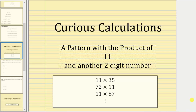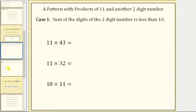In this video, we will discuss a pattern that will allow you to easily determine the product of 11 and another two-digit number. There are two cases to consider. The first case is when the sum of the digits of the two-digit number is less than 10.